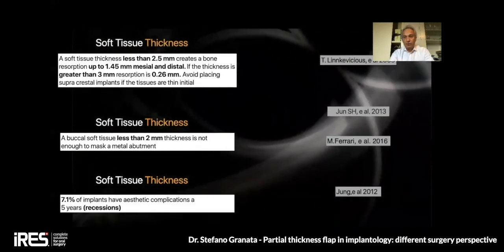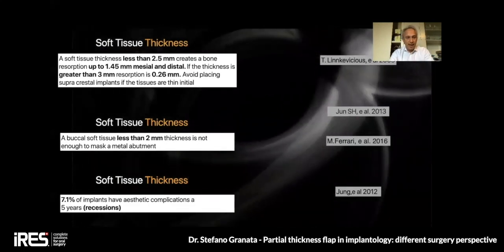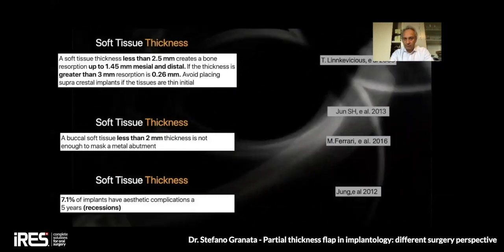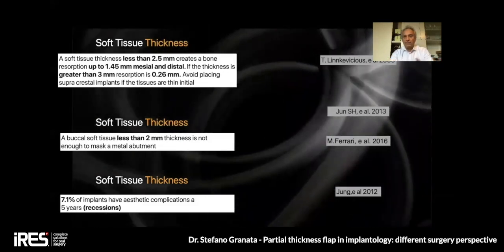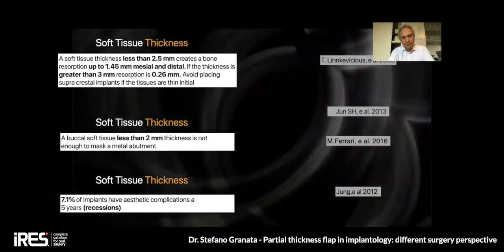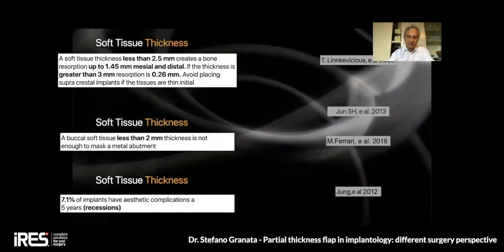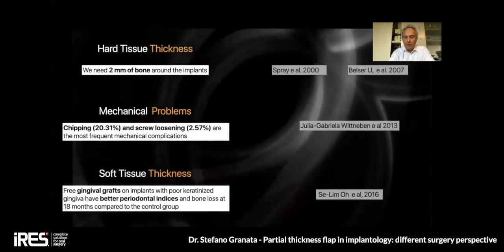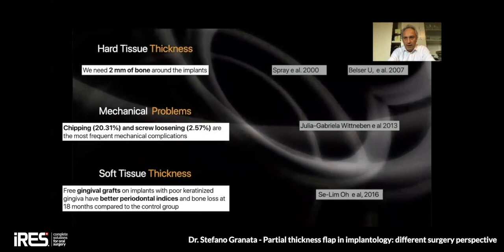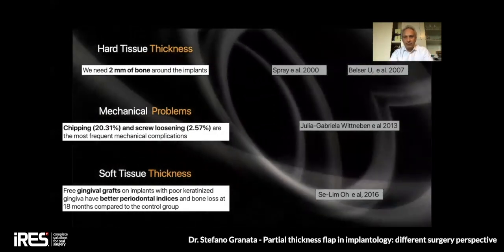For soft tissue thickness, this is a very interesting article from Linkovitsch — on humans, not animals. A soft tissue thickness less than 2.5 millimeters creates bone resorption up to 1.45 millimeters, versus only 0.26 millimeters with tissue more than 2.5 millimeters (around 3 millimeters). We also know that we need more than 2 millimeters to cover a metal abutment to prevent gingival recession from the metal. We have more than seven percent recession on implants causing aesthetic complications.